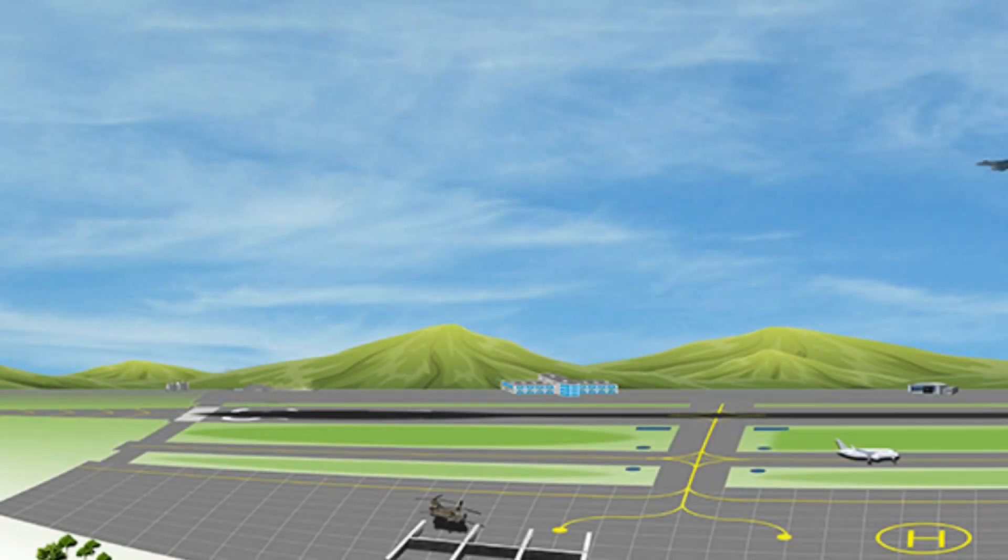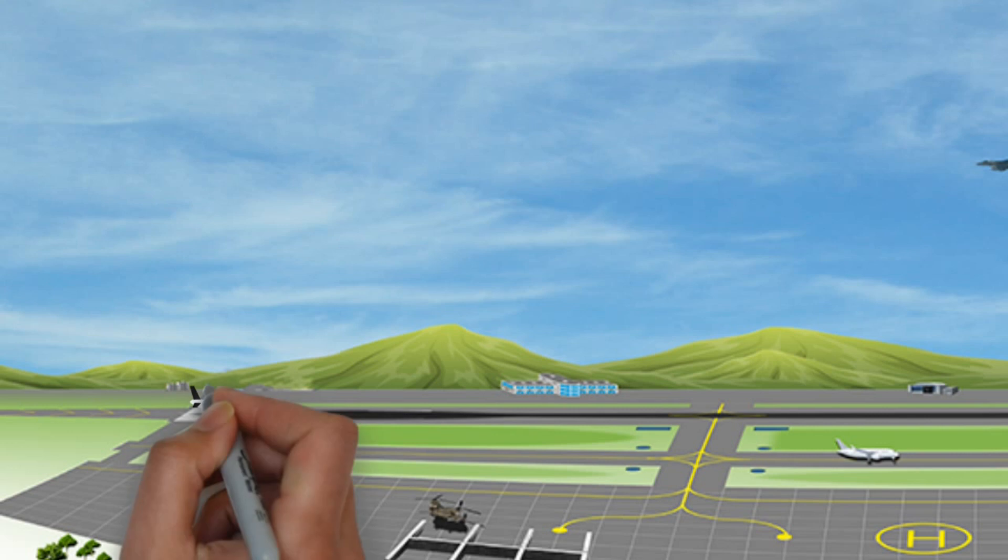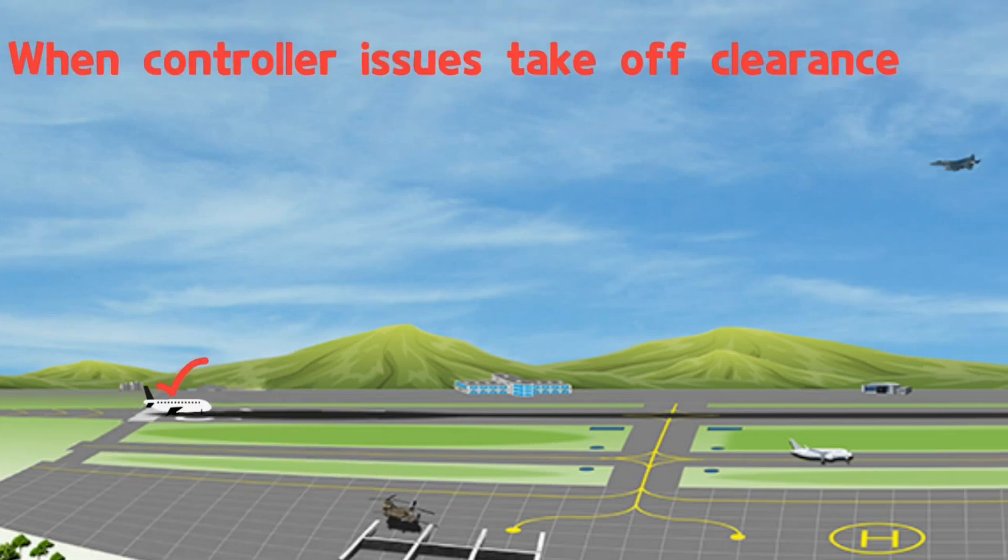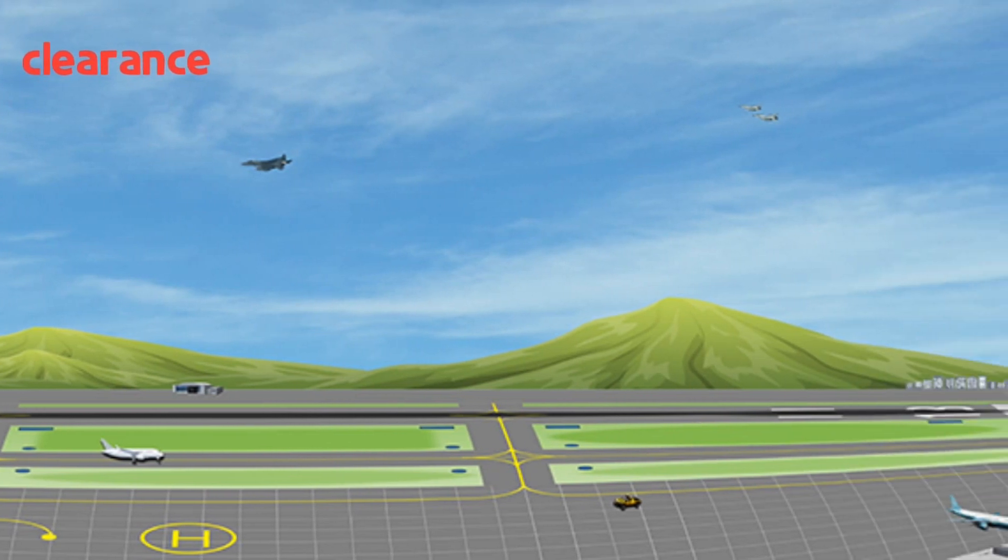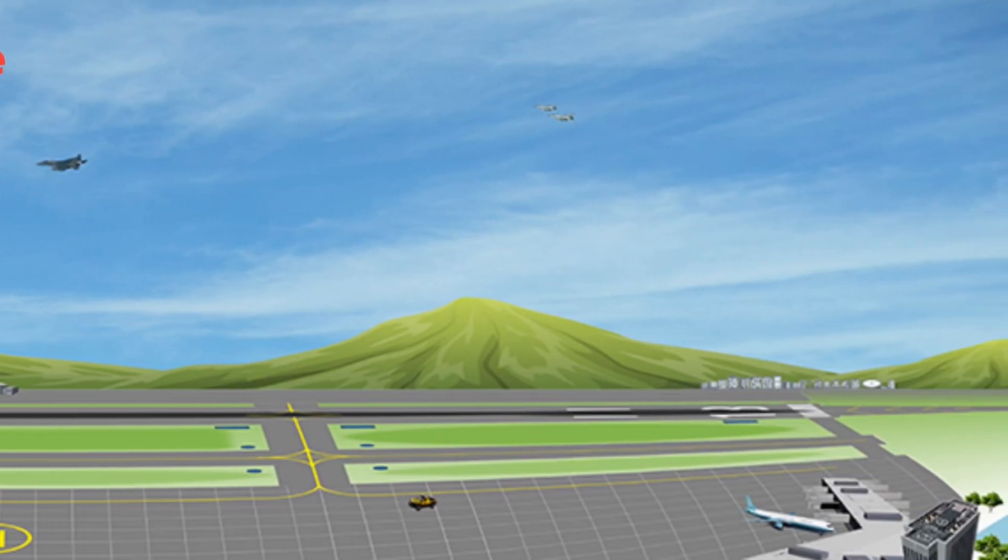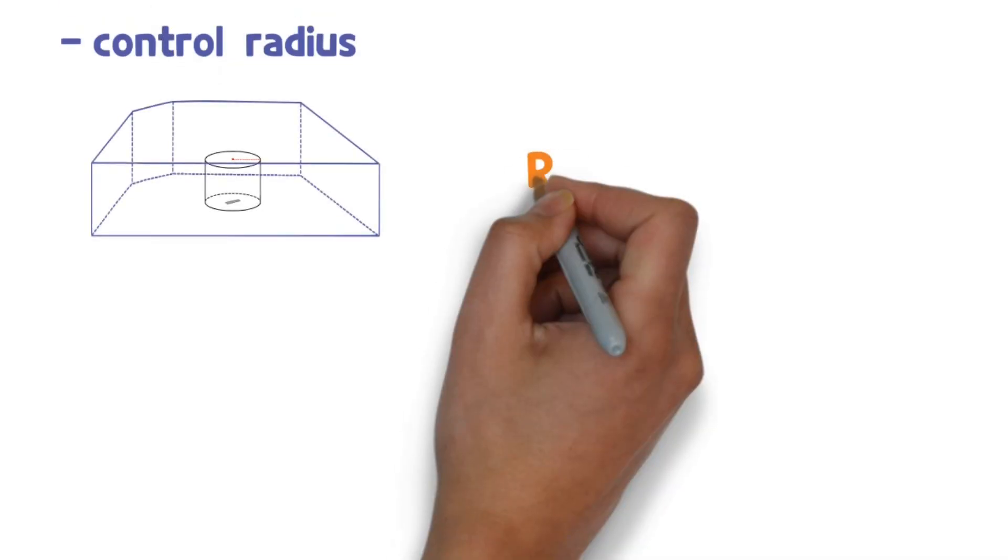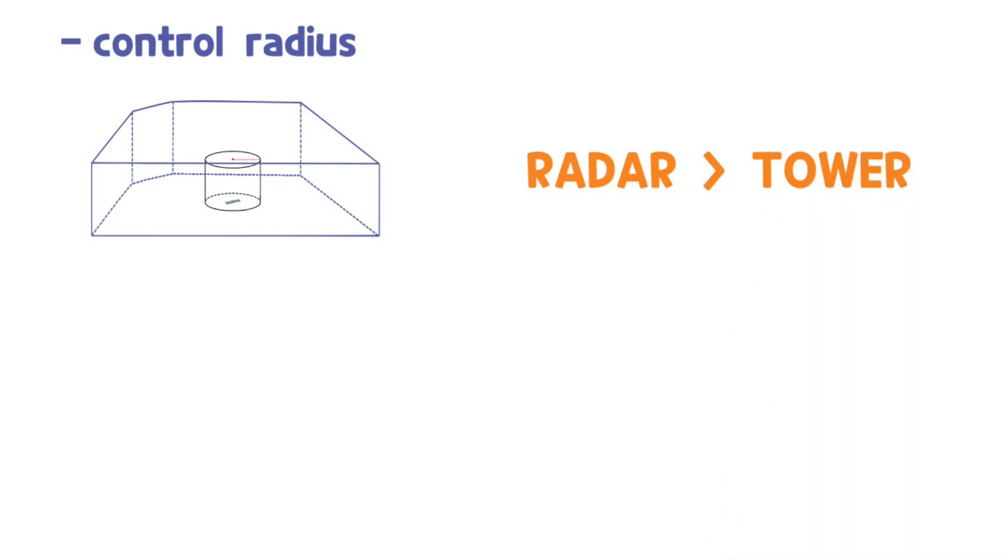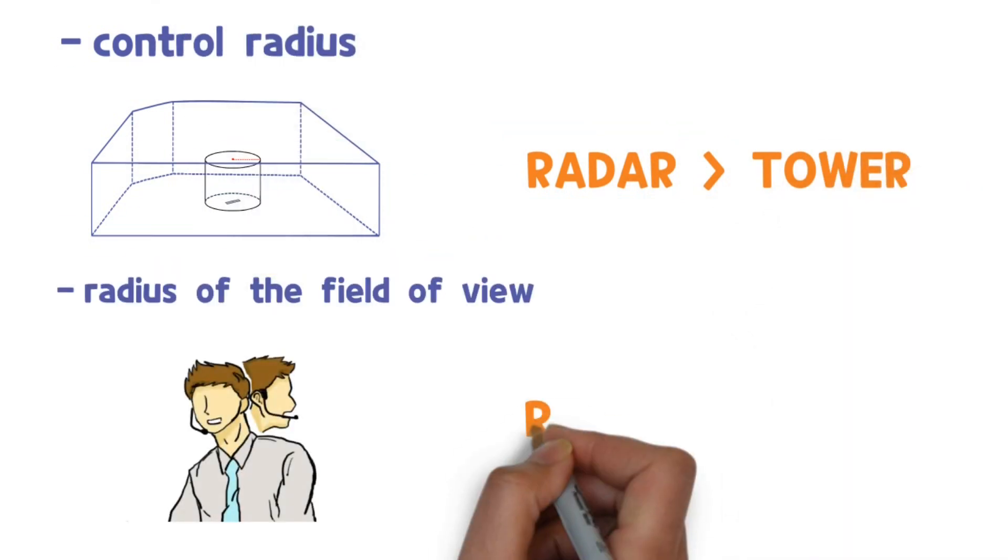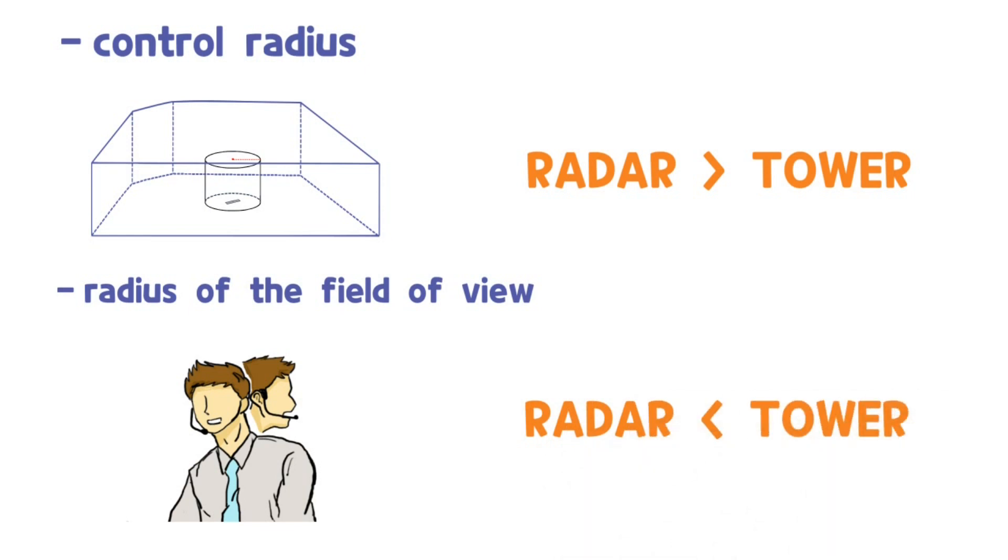For example, suppose a controller issues a takeoff clearance to an aircraft. At this time, the controller should comprehensively check not only the taking off aircraft, but also the entire runway and other landing aircrafts. In other words, the actual control radius is much wider for radar controllers, and the radius of the field of view seen by the controller is wider for tower controllers.